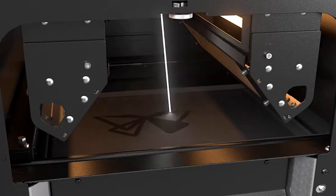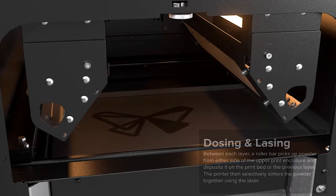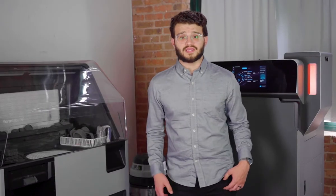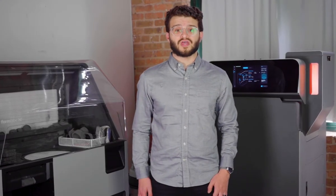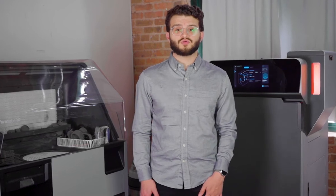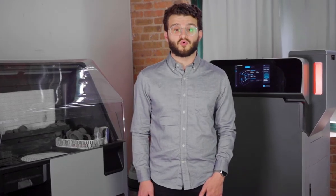Once one layer is complete, a doser spreads a new layer of powder on top of the volume and the process repeats. Once the build is complete, the printer will then enter a cool down cycle to bring the parts down to room temperature slowly to avoid thermal shock.